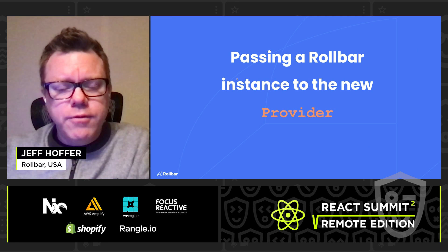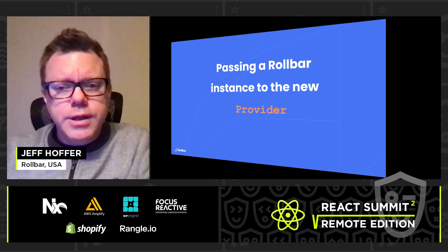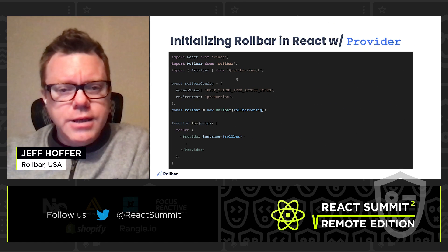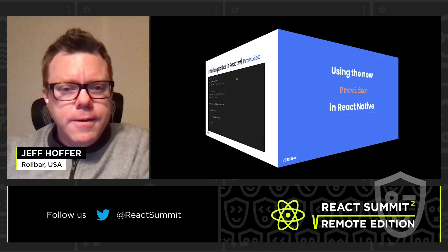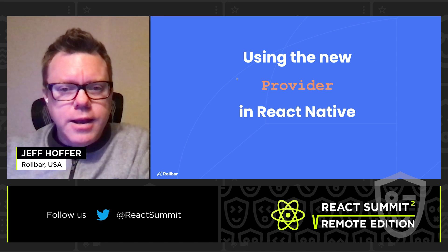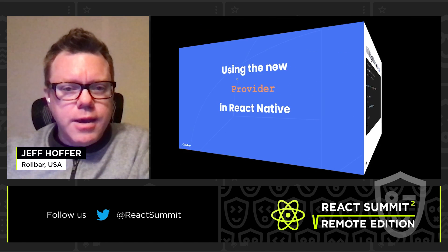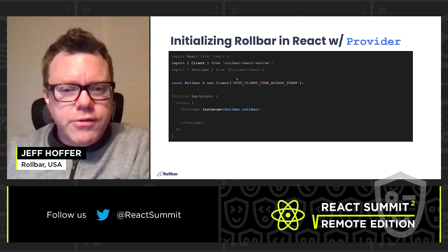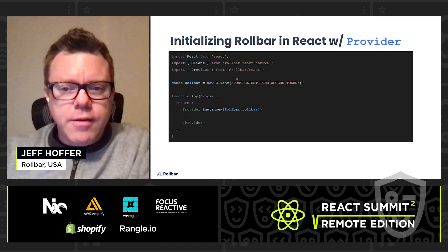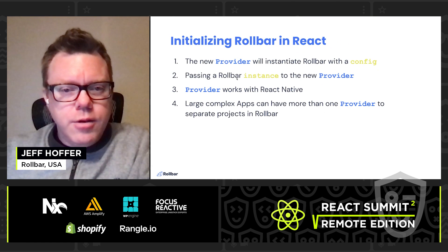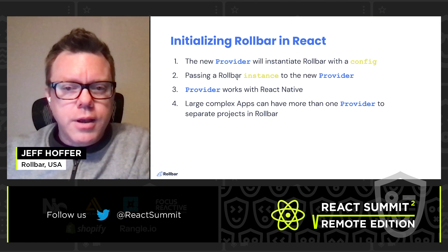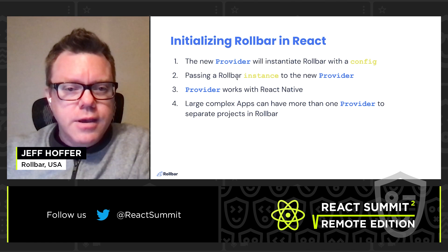Because we want to remain flexible, you can also pass your own instance to the provider by instantiating it first and using the instance property. The provider even works with React Native using the Rollbar React Native SDK package. We'll use the provider's instance property again, but this time after we create the Rollbar React Native client, we'll pass the underlying Rollbar JS SDK instance into our provider. The new provider makes initializing Rollbar and plugging it into your React app very easy.